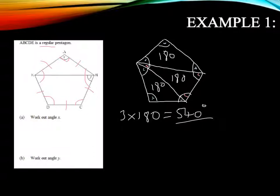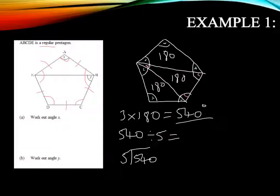Now I don't want all of them. I only want one. Here it is up here, x. I only want one of them. But because it's regular, we know that all five of these are exactly the same. So what I can do is take 540, divide it by five. And if you want, you can use your bus stop method, or whichever way that you want to do this. So 5s into 5 go 1, 5 into 4 is 0, 5 into 40 is 8. So angle x is 108 degrees.